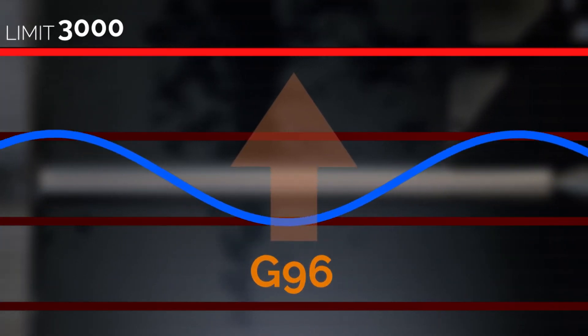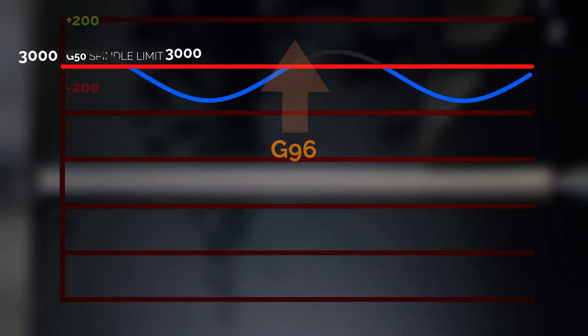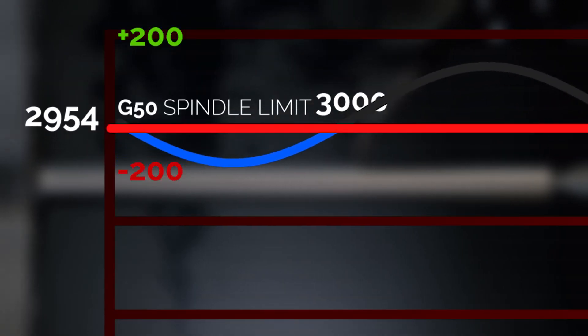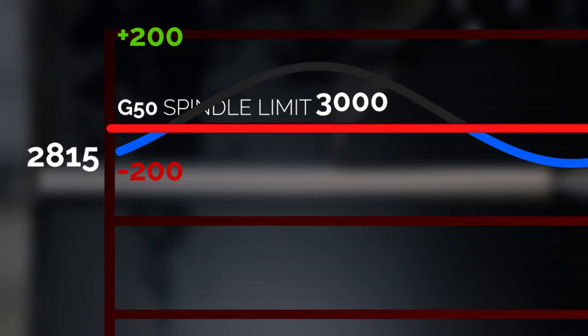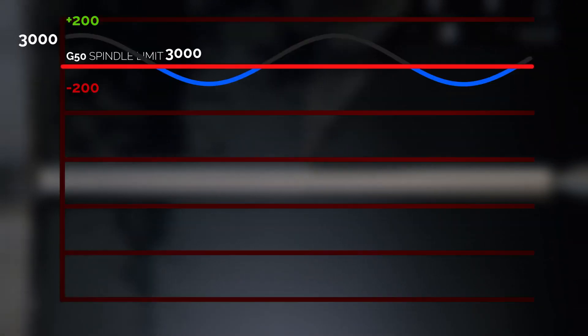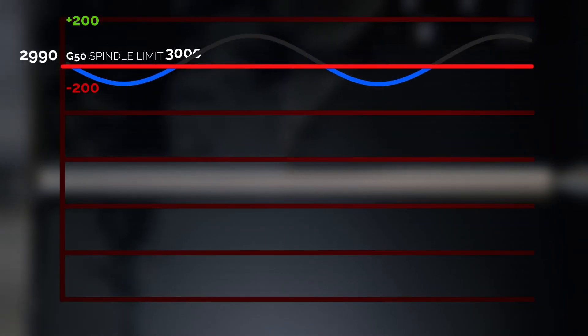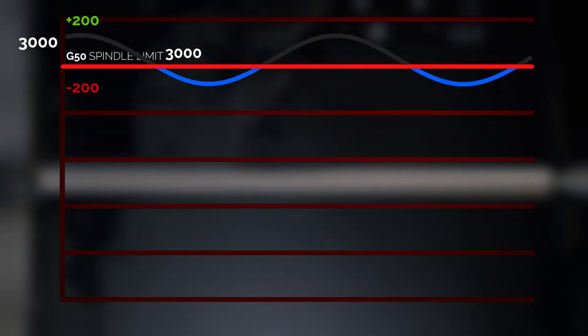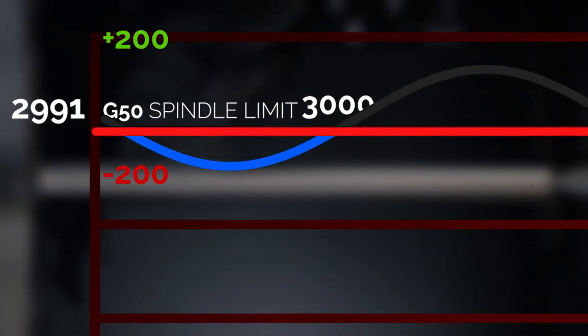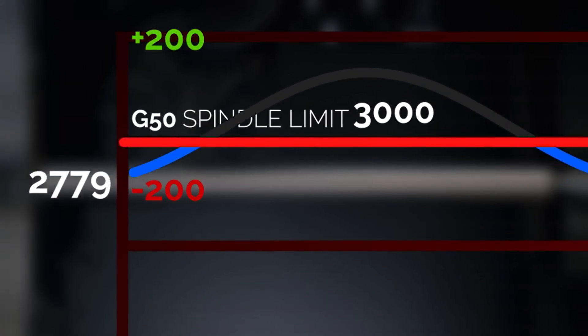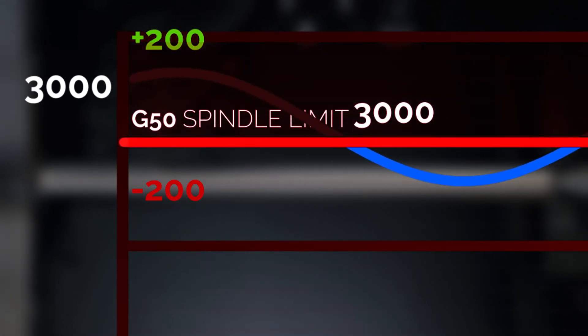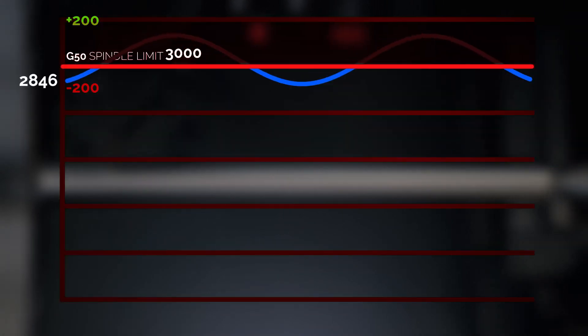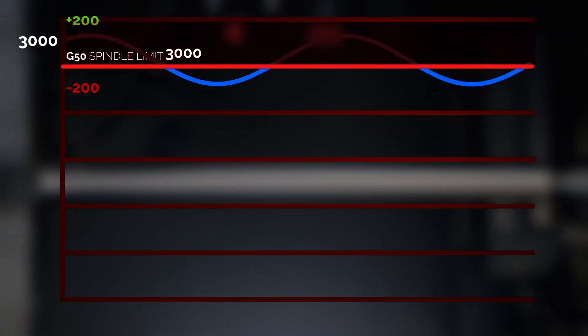Now, G96 is attempting to push the spindle to 3150 RPM. Remember, the spindle speed is being limited to 3000 RPM by the G50 command. So, we have a problem. The black line rising above the 3000 RPM ceiling represents the part of the SSV range that's being clipped. The blue line below this represents the only portion of the SSV range that's doing anything. So, how do we solve this problem?